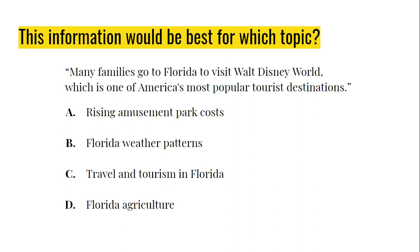So, when I take a look at this, I know that I can probably eliminate Florida agriculture pretty quickly, because this statement about families going to Florida doesn't have anything to do with farming. I could also eliminate Florida weather patterns, because this sentence has nothing to do with weather. And finally, although Walt Disney World is a popular destination and there are amusement parks there, this statement doesn't talk anything about the cost. Therefore, I would only use this statement if I were writing about travel and tourism in Florida.